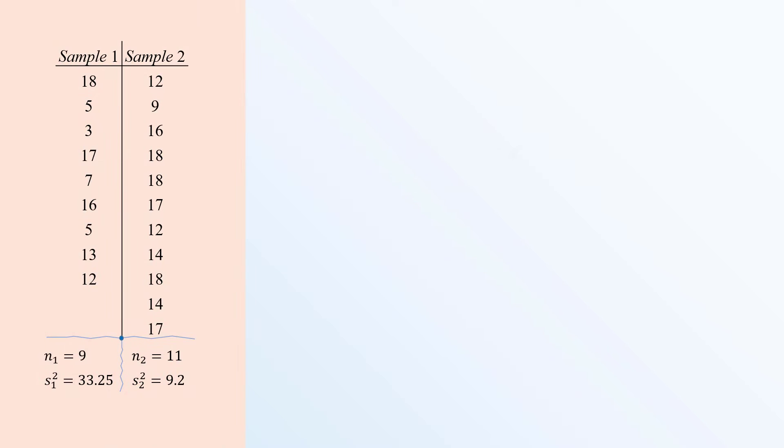The null hypothesis would be that the ratio of the two population variances is 1. That is, there is no significant difference between the two population variances. The alternative hypothesis would be that the ratio is not equal to 1. That is, there is a difference.